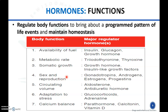Sex and reproduction are regulated by gonadotropins, androgens, estrogen, and progesterone. Circulating volume and body fluid are regulated by aldosterone and antidiuretic hormone. Adaptation to stress conditions is regulated by glucocorticoids and adrenaline. Calcium balance in the body is regulated by parathormone, calcitonin, and vitamin D. These are the different functions of different hormones in the body in general.